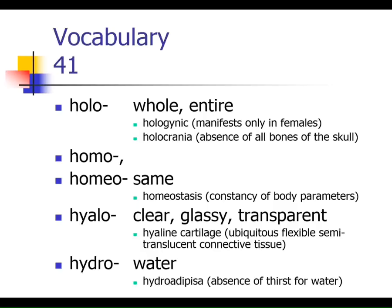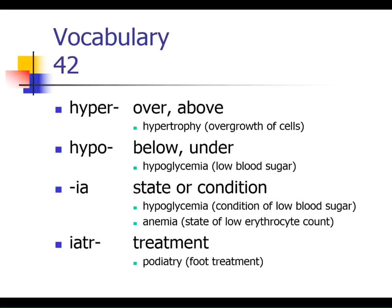'Hydro' means water — that one's familiar. 'Hyper' means above or over. We saw hypertrophy when dealing with tissues — cells actually get bigger, as opposed to hyperplasia which is division by mitosis. 'Hypo' means under or below. Hypoglycemia is a condition where blood sugar is low — 'emia' means condition of the blood, and 'ia' is a state or condition. So hypoglycemia is a condition of low blood sugar.